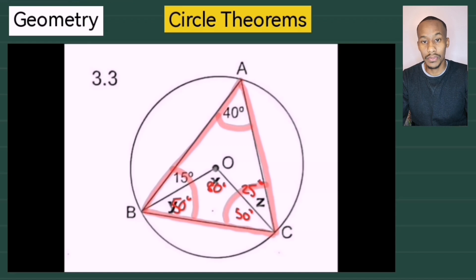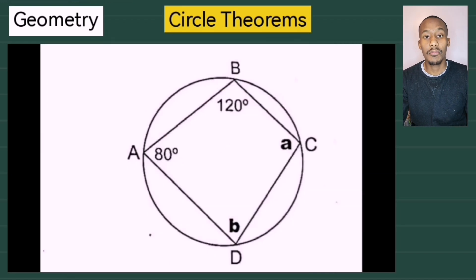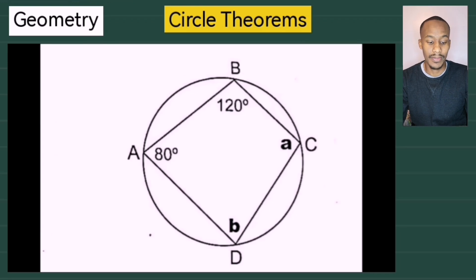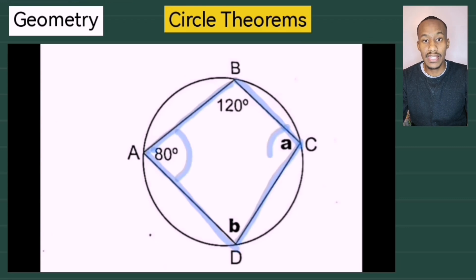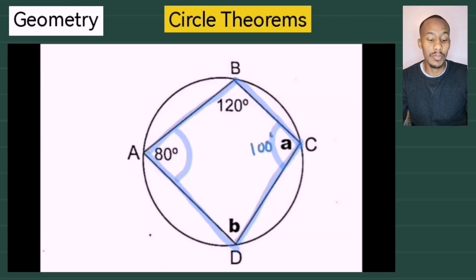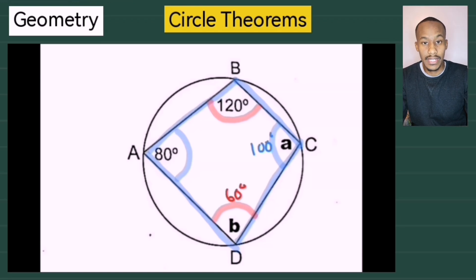Moving on to example number two. ABCD is a cyclic quad. Opposite angles of a cyclic quad sum to 180 degrees. Therefore, lowercase a would be 100 degrees and lowercase b would be 60 degrees — opposite angles of a cyclic quad.